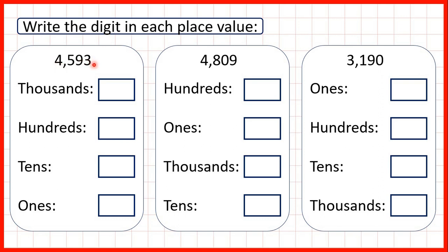With decimals, we need to remember to count place values from the decimal point. But for whole numbers, we can count from the end. So remember, ones, tens, hundreds, thousands.